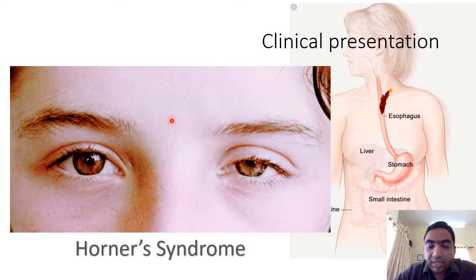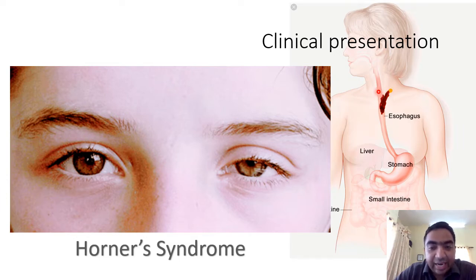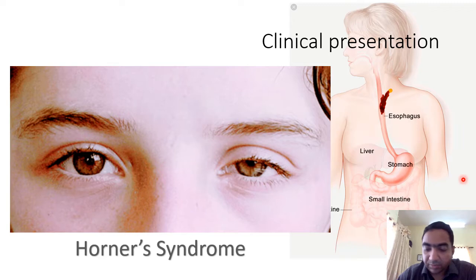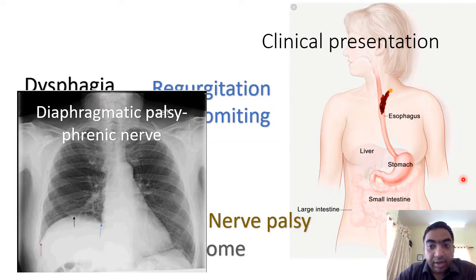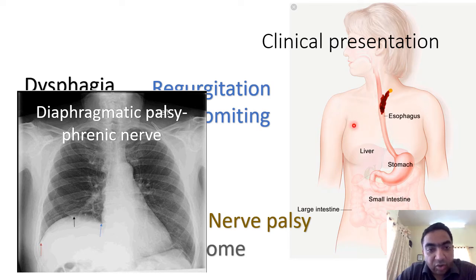Horner's syndrome can occur if an upper or mid-esophageal tumor involves the stellate ganglion, causing ptosis, miosis, anhydrosis, and enophthalmos. The phrenic nerve also passes through the mediastinum, so if an esophageal tumor involves the phrenic nerve it can cause diaphragmatic palsy.